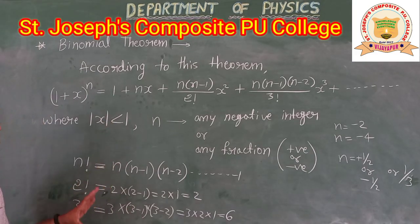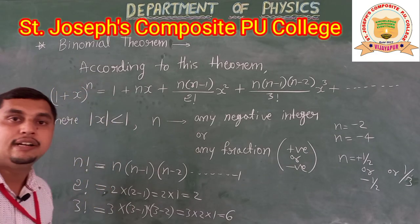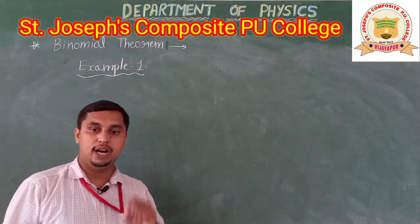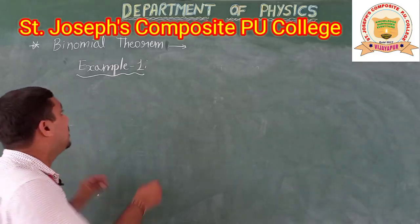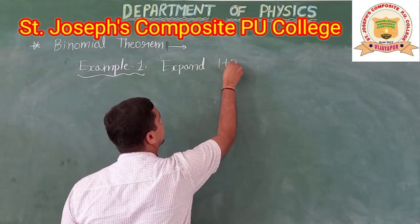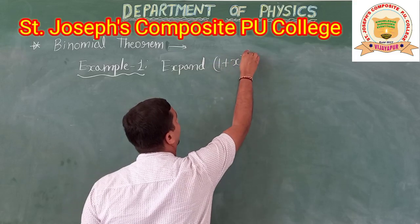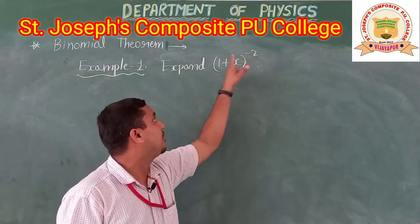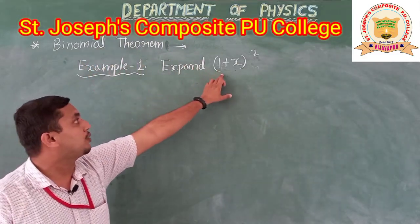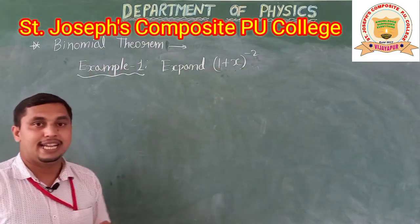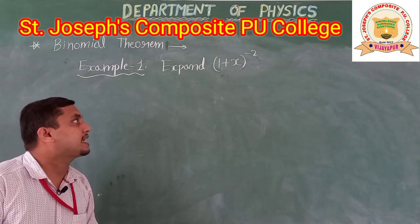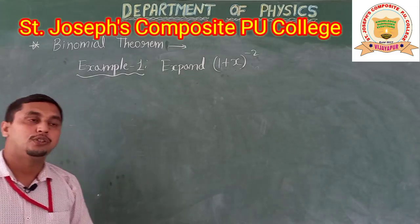This is about the general form of the binomial theorem. Now see Example 1: expand (1 + x) to the power of minus 2. By using the binomial theorem, we have to solve this — expand (1 + x) to the power of minus 2.